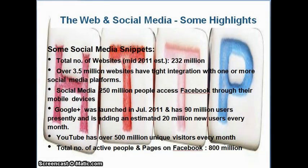Here are some snippets and highlights about social media. Around the middle of last year, 2011, the total number of websites in the public domain was estimated at over 230 million. A percentage of these — not yet very large but growing by leaps and bounds — over 3.5 million websites had very tight integration with one or more social media networks. To give some ideas about social media numbers: 250 million people access Facebook through their mobile devices, YouTube has over 500 million unique visitors every month, and Google+, launched in July 2011, has already crossed 100 million users and is adding about 20 million users per month.